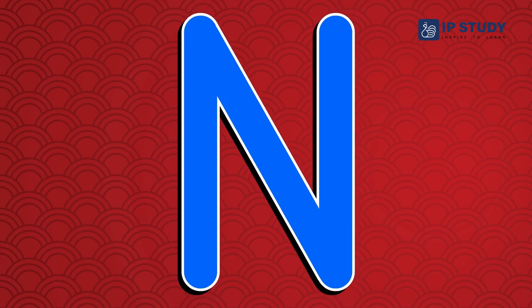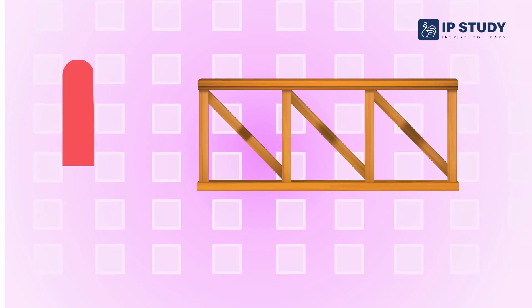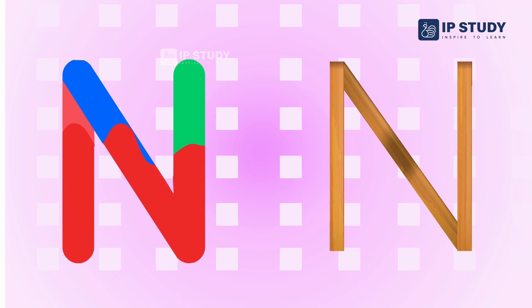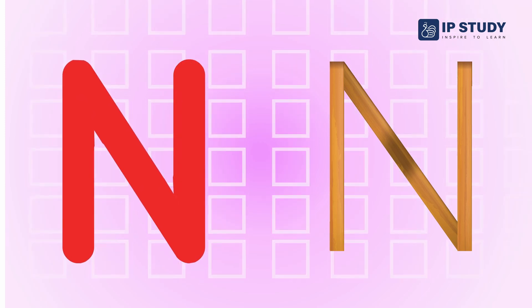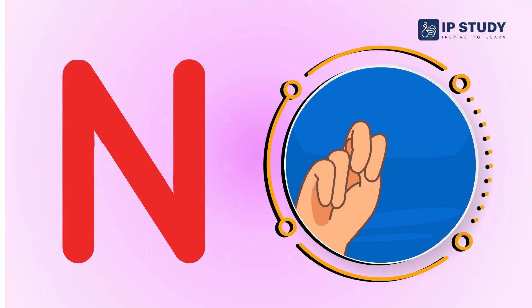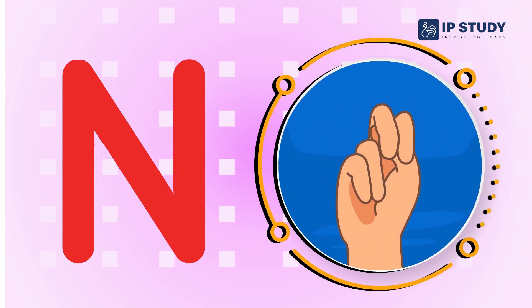This is an N. Shape of wooden fences also looks like N. Do you know that we can show letter N using our hands? Like this.